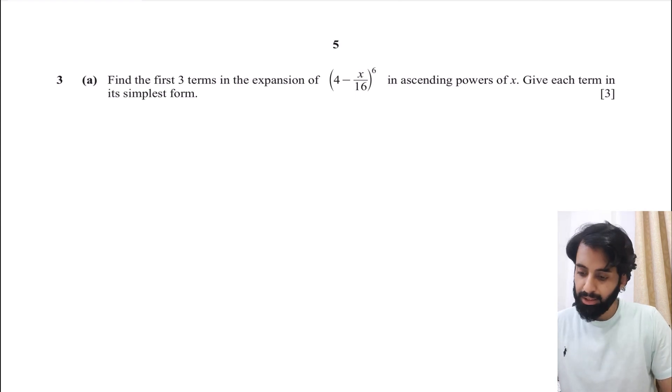So this is from May, June 2020, paper 1, variant 2. So here's a question which says, find the first three terms in the expansion of (4 - x/16)^6 in ascending powers of x. Give each term in its simplest form. All right.